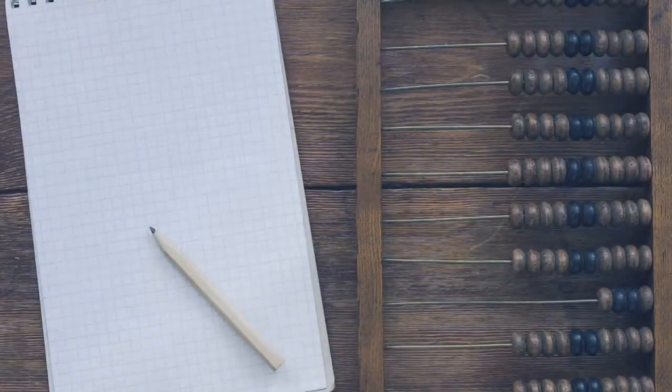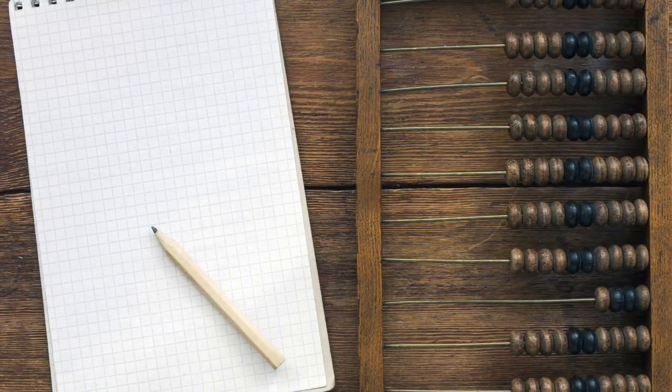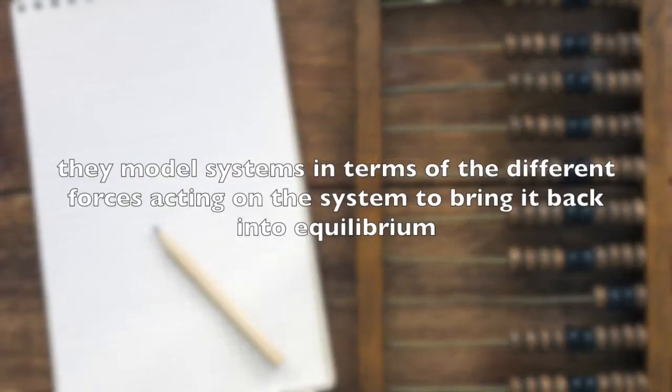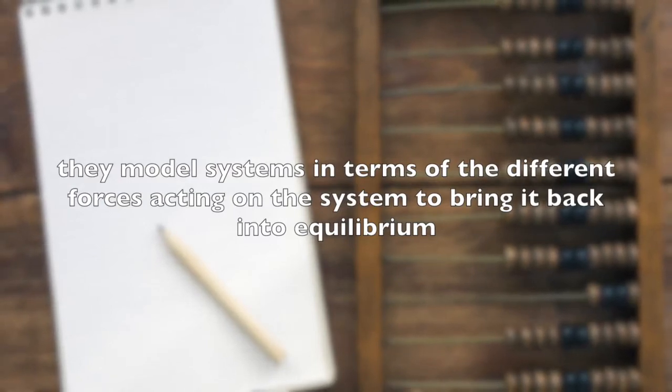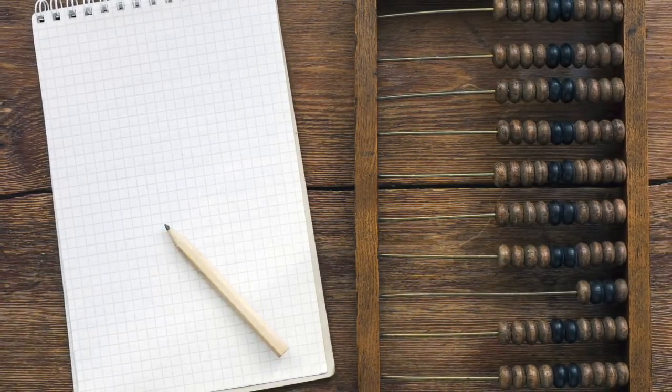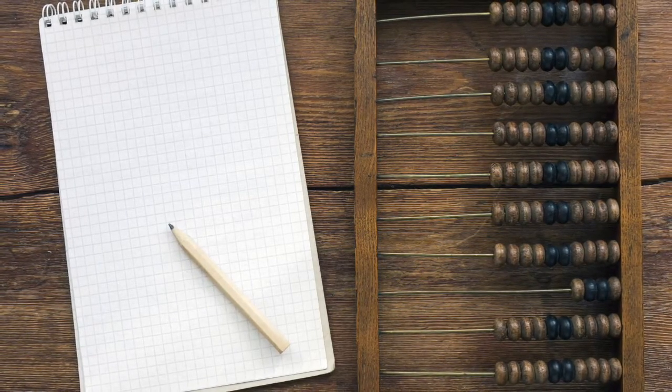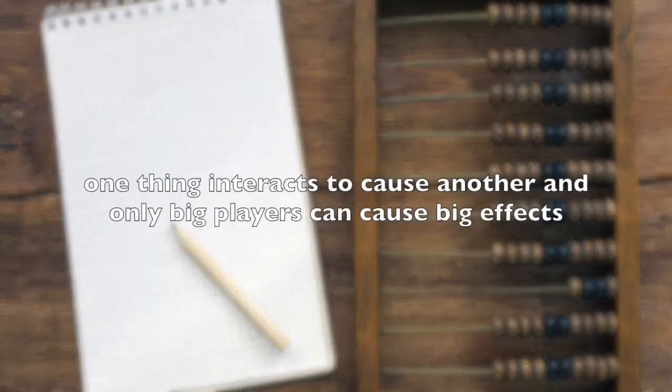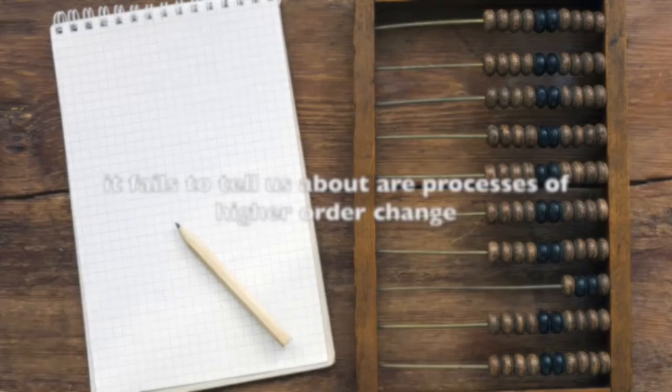Linear models are inherently static. They are always in relation to equilibrium. They model systems in terms of the different forces acting on the system to bring it back into equilibrium. Such models may tell us about normal periods of stability and incremental change. They tell us about the linear interaction between the components where one thing interacts to cause another, and only big players can cause big effects.